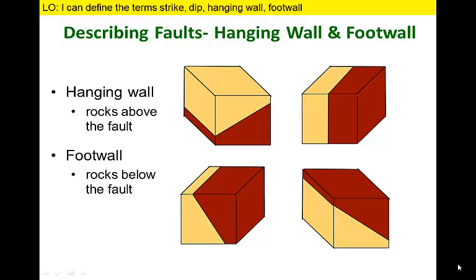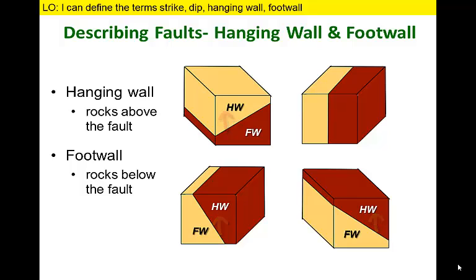Two other key terms needed to classify faults are hanging wall and foot wall. Geologists name the block above an inclined fault surface the hanging wall, and the block below the surface the foot wall. A simple way to identify which is which is to place your finger on the fault surface and move it upward — it will automatically be located in the hanging wall. The only time we can't use these terms is when the fault is vertical and neither block can be considered above or below the other.